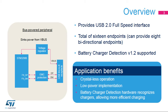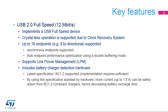Application benefits include crystal-less operation, a low-power implementation, and faster charging, thanks to the charger detection function. The USB Full-Speed Interface is a USB 2.0-compliant interface that operates at a 12 megabit per second bitrate, and a USB FS device can be implemented.